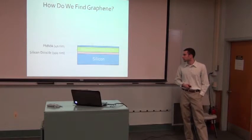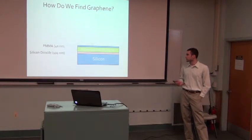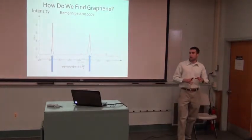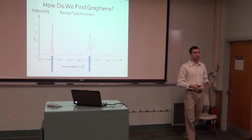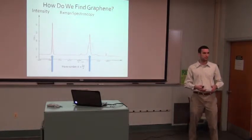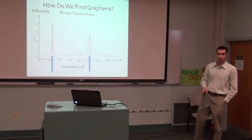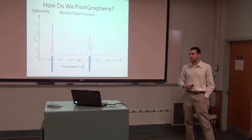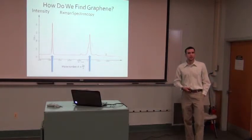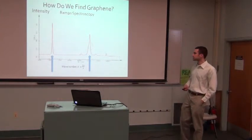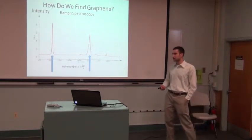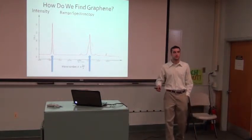Once we've found something under the optical microscope that we think might be graphene, our next step is to confirm it. Because obviously our eyes aren't always 100% correct.